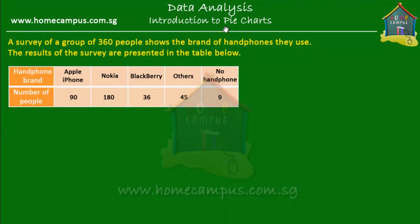Welcome to homecampus.com.sg. In earlier classes, we learned about tables, line graphs, and bar graphs. In this lesson, what we learn about is another kind of graph — it's a circle graph, and we call that a pie chart.